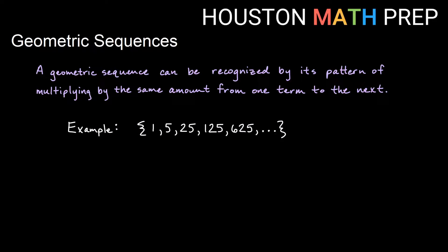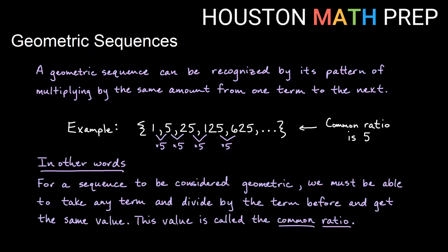So here we've got an example: 1, 5, 25, 125, 625. You might be able to tell that the pattern is multiplying by 5 to get from one term to the next. So we would say this is a geometric sequence because it has a pattern of multiplication that is the same. Just like when we had a pattern of adding the same thing in arithmetic sequences and we called that a common difference, here in a geometric sequence we should be able to take any term and divide by the term before it, and that gives us the common ratio — what we're multiplying by each time. So in this one, my common ratio is 5.